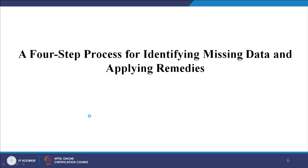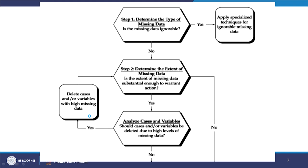When you have filled in data quickly and missed a few entries, or put in wrong data, or included questions that were unclear to respondents who then did not fill them up - these are the typical problems that can occur. There is a four-step process for identifying the missing data and applying remedies.